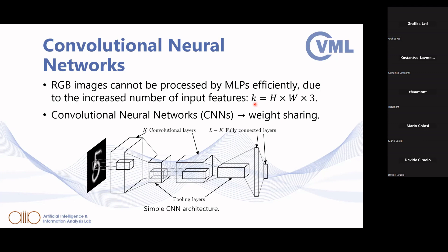In this case, we can use convolutional neural networks, or CNNs, which use convolutional layers. These layers use a weight-sharing mechanism, as we will see in the next slide, which allows us to reduce the complexity of processing image data.